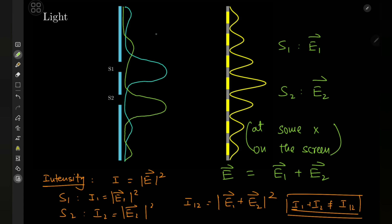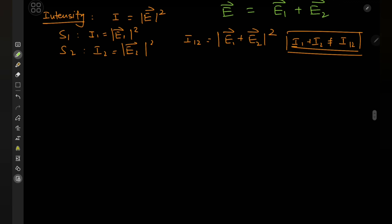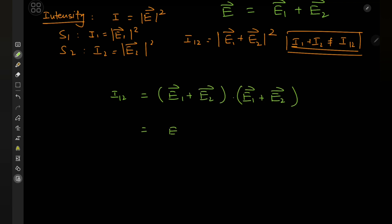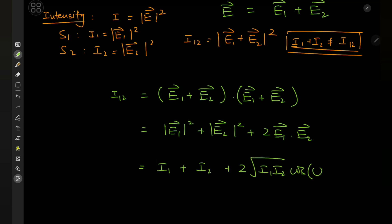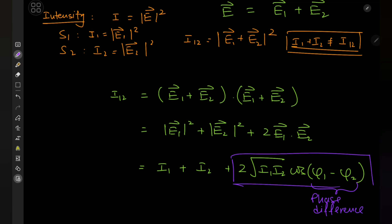We can observe this interference mathematically by taking the I12 term and expanding it, using the fact that the squared magnitude of a vector is given by its dot product with itself. Performing the vector algebra, we get a cross term — a relation between I12 and the individual intensities, plus a phi1 minus phi2 term called the phase difference at point x on the screen. This entire cross term is the interference term. The phase difference arises because of the difference in distances light travels from S1 versus S2 to reach some point x.